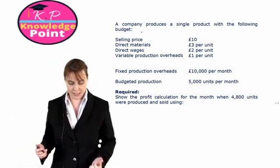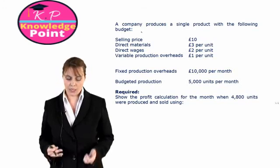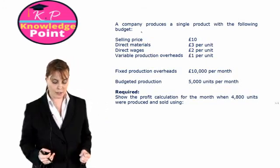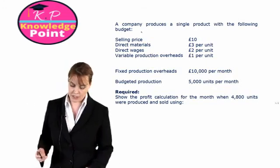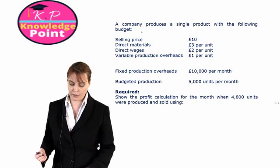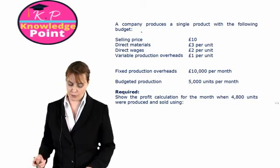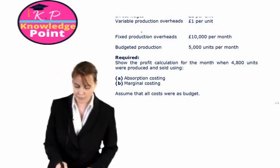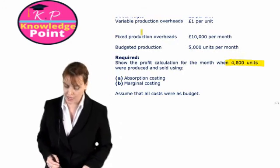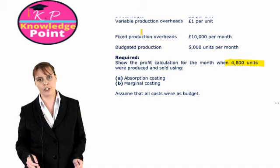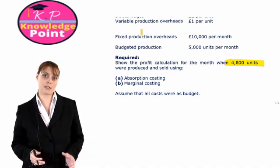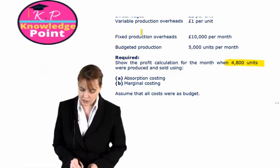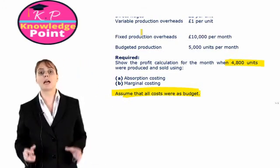We have a company that produces a single product with the following budget. We have the per unit budgeted information. We're told that our fixed production overheads are budgeted at £10,000 per month, where our budgeted production is 5,000 units. We want to do our profit calculation based on production and sales of 4,800 units using an absorption costing system and a marginal costing system. Assume that all costs were as budget.